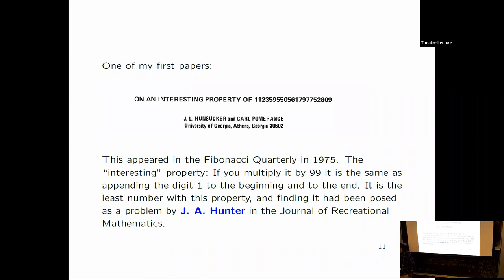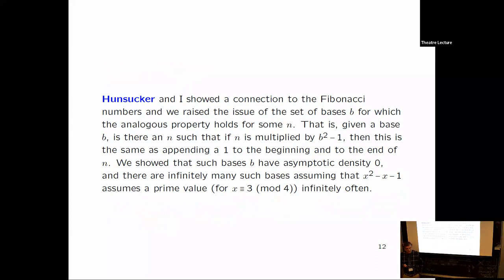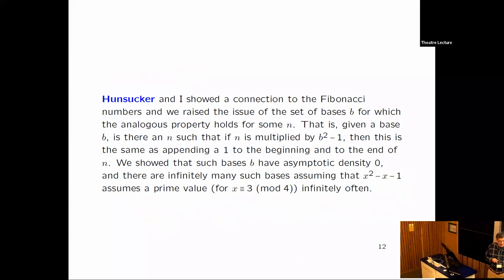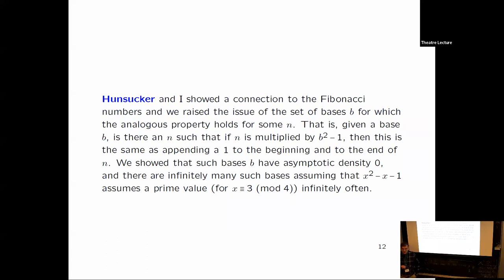So colleague John Hunsucker and I, we wondered, well we figured this out, that that was the least number, and we wondered how special is this for the base 10? Now you have to generalize to other bases. The number 99, if it's in base B, should be B squared minus 1. So you have a number in base B multiplied by B squared minus 1, and that just tacks on a 1 at the beginning and a 1 at the end. So we gave a criterion for this to happen, and we proved that the numbers that satisfy this criterion have asymptotic density zero.